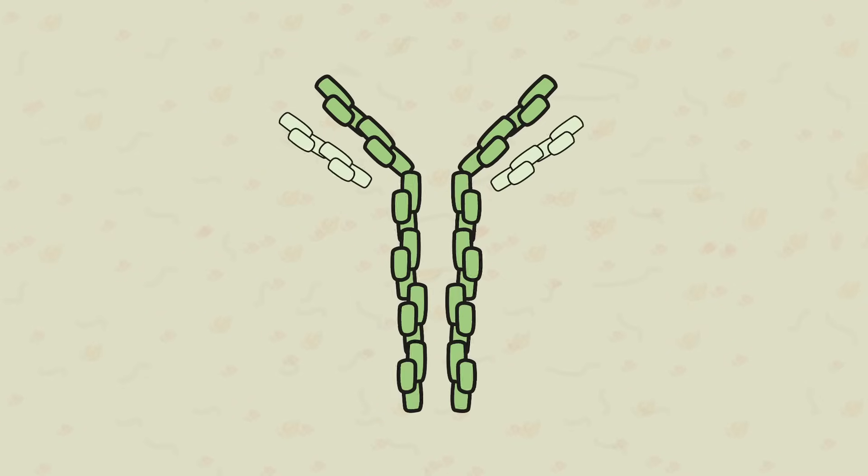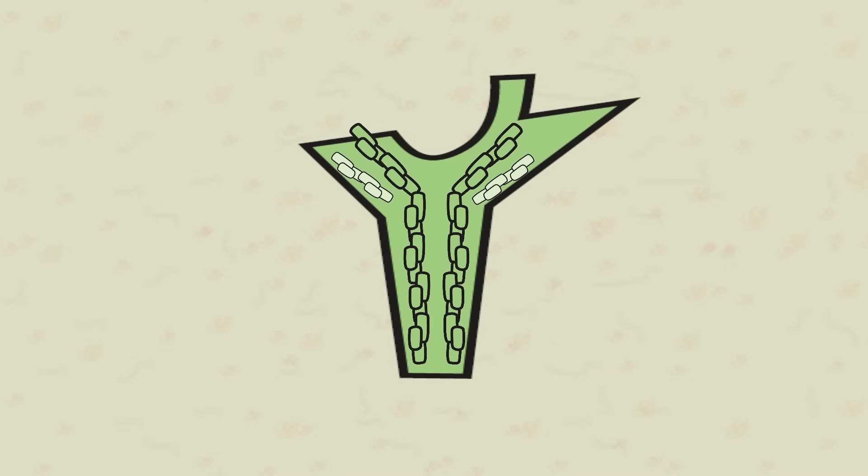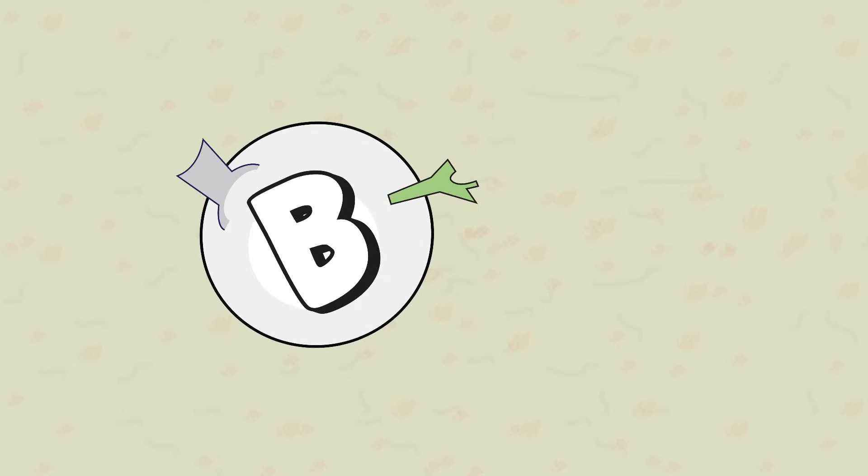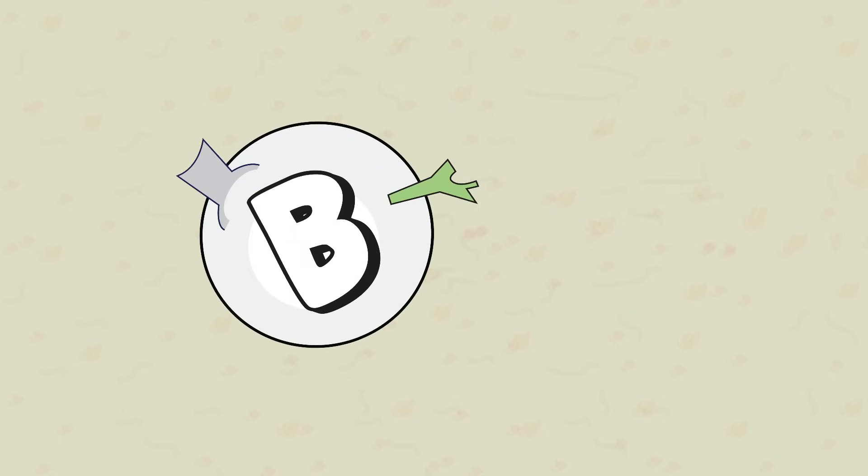The side of the Ig that has two heavy chains forms a stable non-variable receptor point called an effector. This effector is part of the Ig molecule that binds with our own immune system cells.